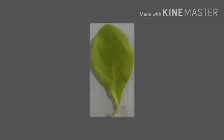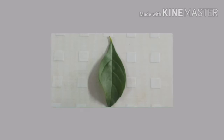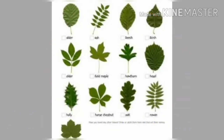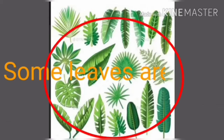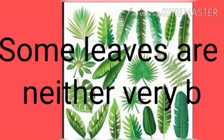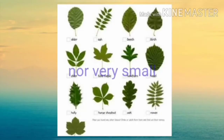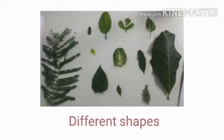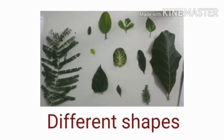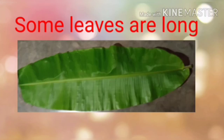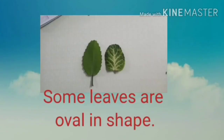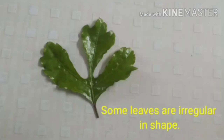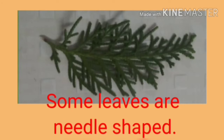Children, observe the leaves. Some leaves are small. Look at the leaves — some leaves are big. Some leaves are neither very big nor very small. We can see different shapes in the leaves. Some leaves are long, some leaves are oval in shape, and some leaves are irregular in shape. Some leaves are needle shaped.